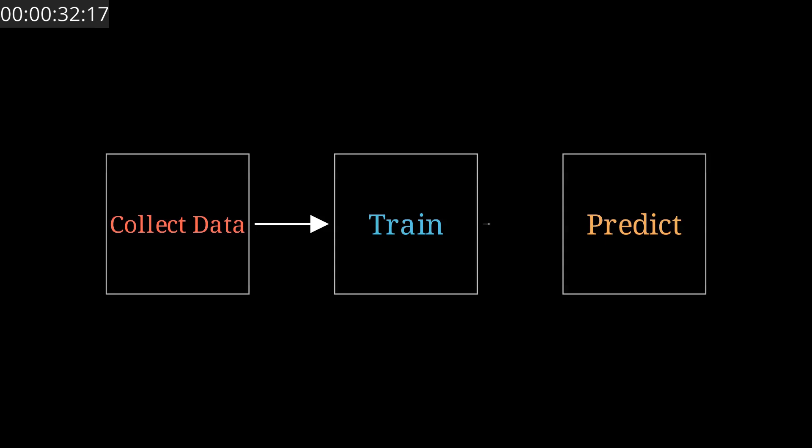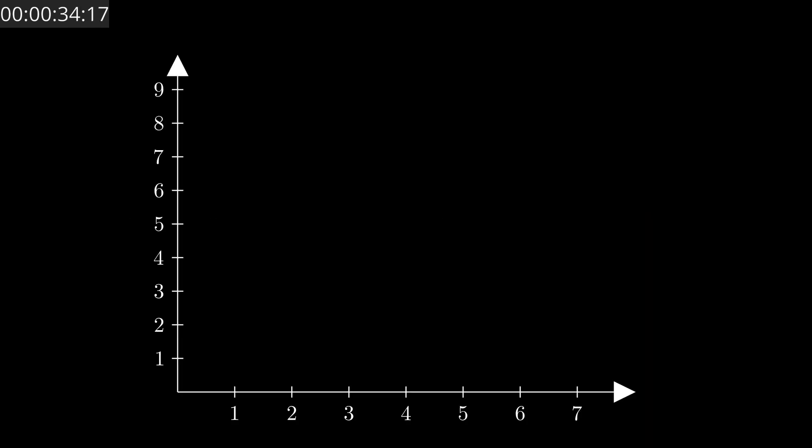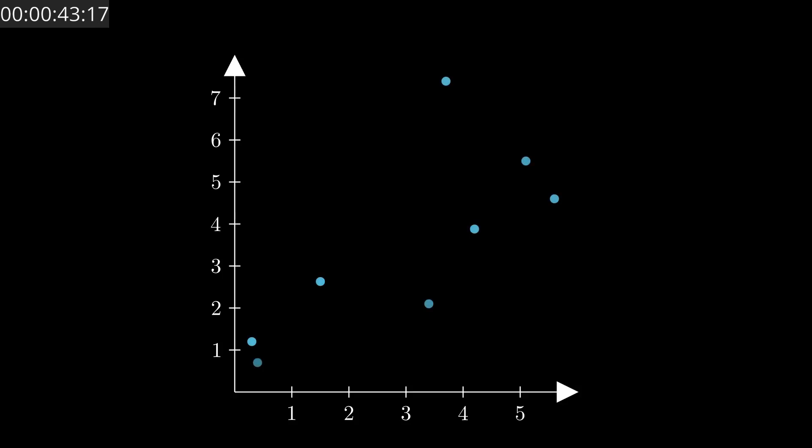At the core, we're just trying to find the best straight line that fits through the data. This line has two parts: an intercept and a slope. Now here's a way to visualize it—imagine each data point as if it has gravity. It tries to pull the line toward itself. The best fit line is the one where all these forces balance out. That's the point of fitting: to get the line that's pulled into the right place by the data.